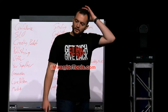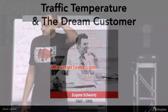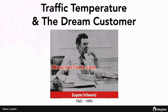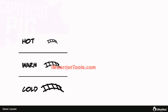I want to talk real quick about something called traffic temperature and the dream customer. How many are familiar with Eugene Schwartz? For those of you who aren't familiar, he's like one of the Michael Jordans of the ad space — back from around 1927 to 1995. He set a lot of precedents for the way a lot of ads are written today, and he taught that there are three traffic temperatures. The first is what we refer to as hot traffic — and there's warm, and there's cold.